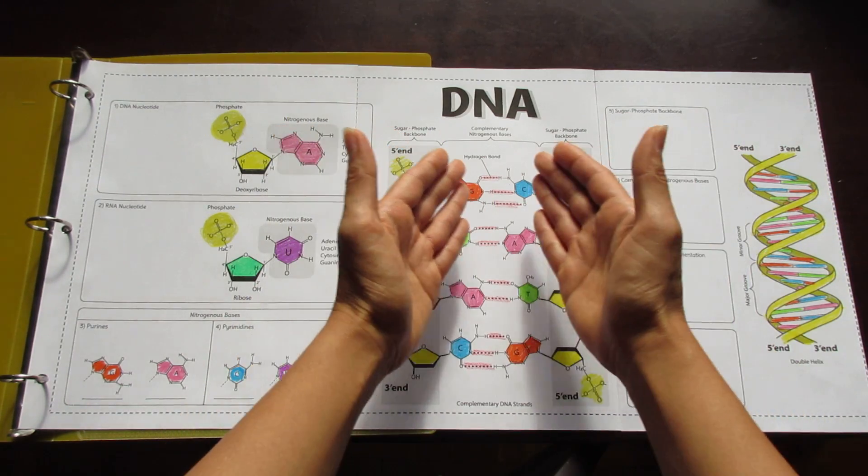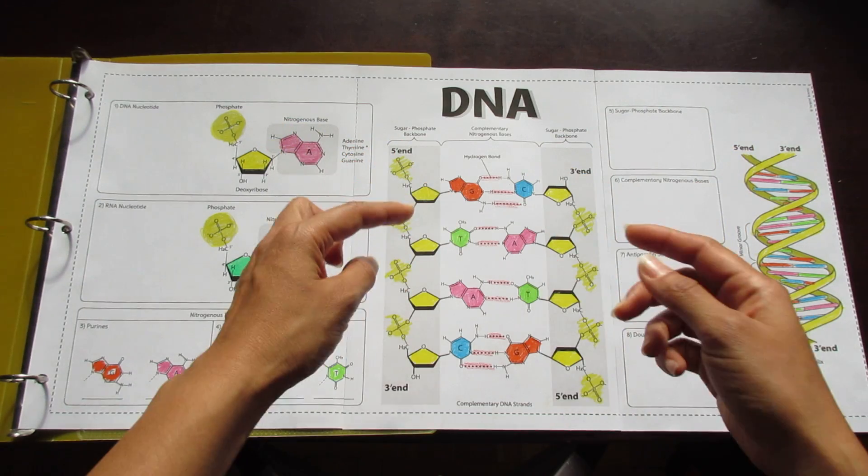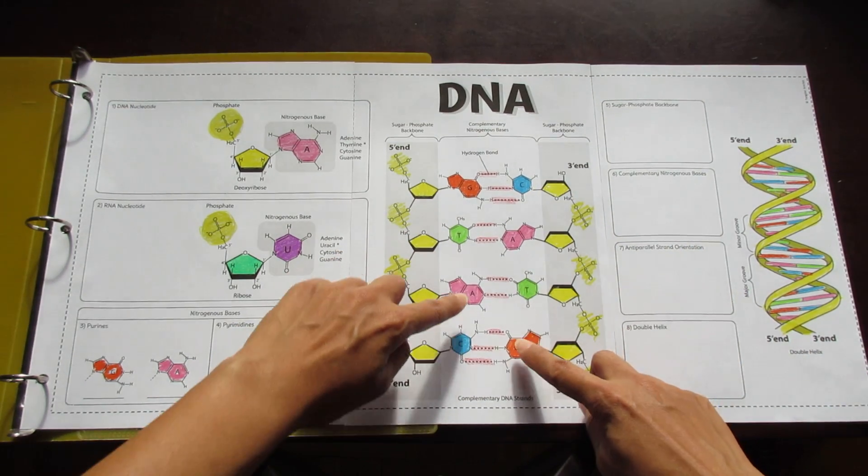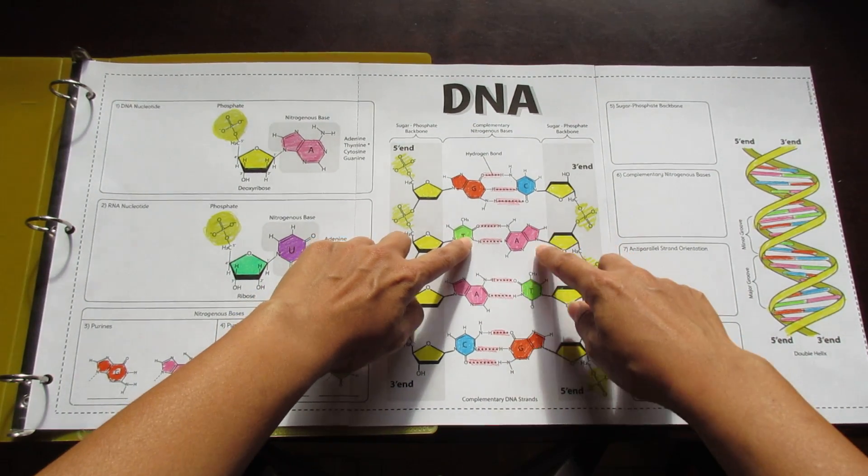In the center, you'll see the nitrogenous bases, complementary base pairing, and I've given all the different potential combinations: guanine to cytosine, cytosine to guanine, adenine to thiamine, and thiamine to adenine.